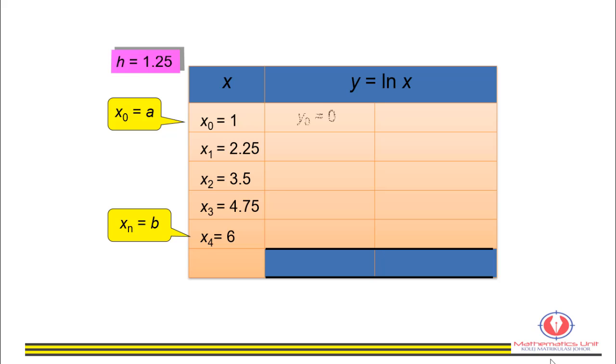Calculate one. We have y₀ equals zero. Calculate 2.25, calculate 3.5, calculate 4.75, and calculate 6. Then find the sum of y in each column.